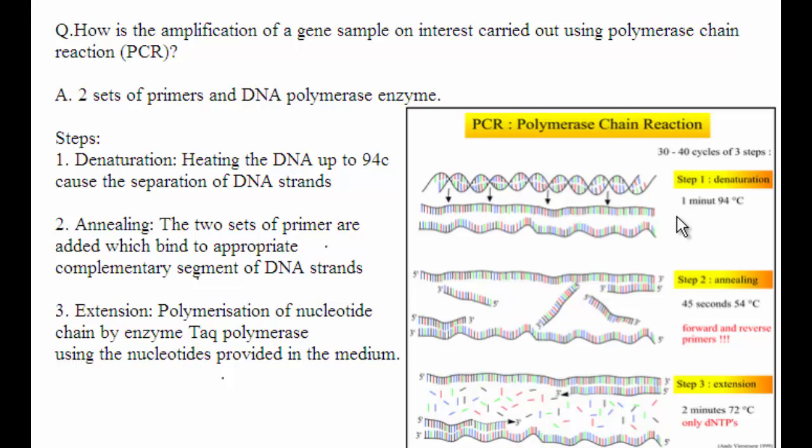The next step is annealing. In annealing, the two sets of primers are added which bind to the appropriate complementary segment of DNA strands. You can see here in the second step.